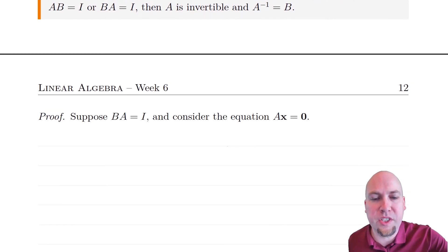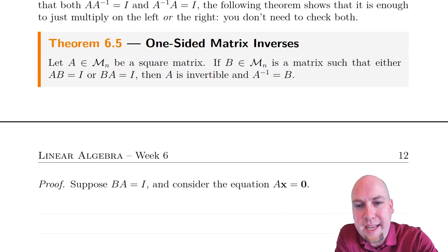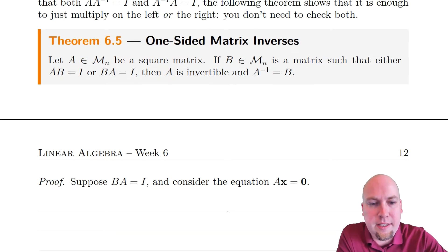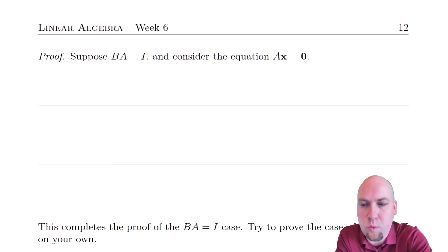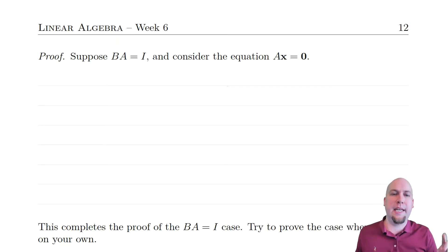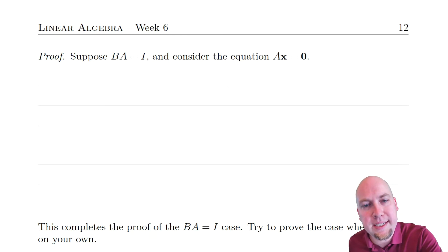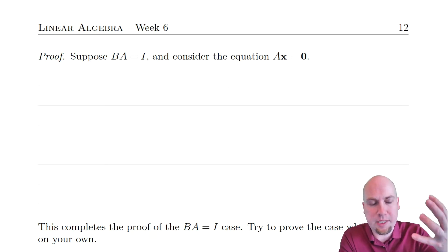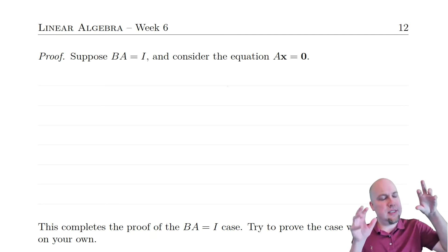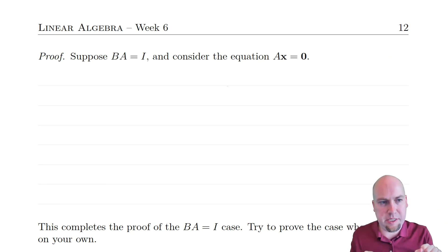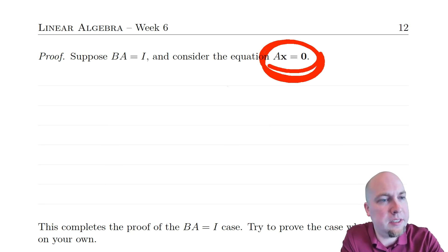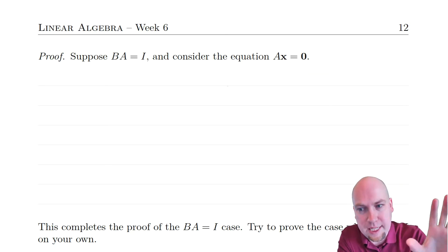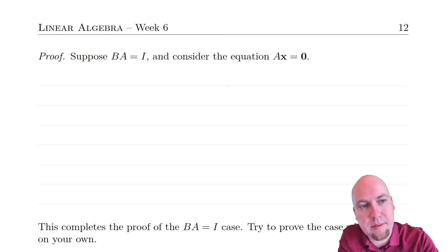Let's go through a proof. We're going to prove it assuming that BA equals the identity — you can prove it assuming AB equals the identity too, nothing drastically changes. So suppose BA equals the identity. Our goal is to show that B is the inverse of A. Consider the equation AX equals zero. That's a system of linear equations, and we saw a couple theorems ago there's a nice connection between invertibility and systems of linear equations. If we can show it has a unique solution, we'll know A must be invertible.